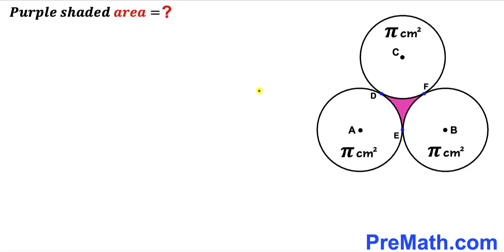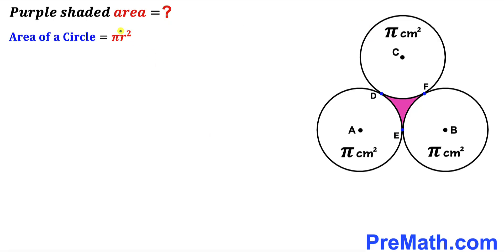Let's go ahead and get started. We know the area for each of these circles is pi centimeter square. Let's assume the radius for these circles is lowercase r, and we are going to find the value of the radius r. Let's recall the area of a circle formula: area is always equal to pi r squared, where lowercase r is the radius. In our case, the area of the circle is pi centimeter square.